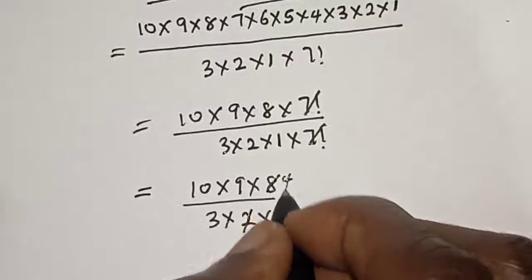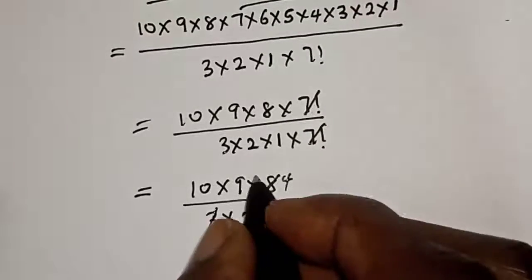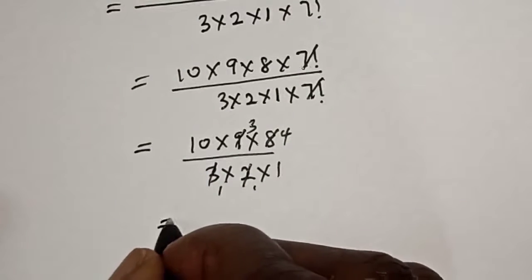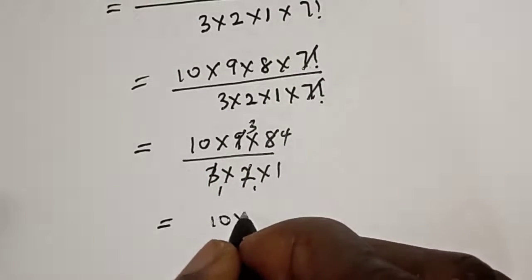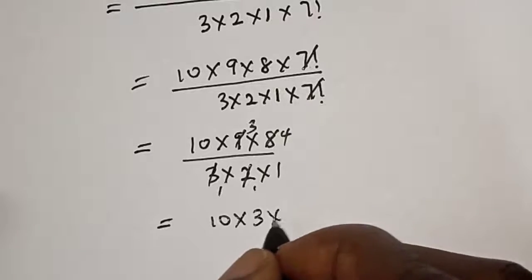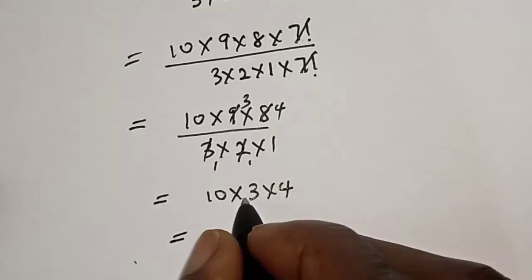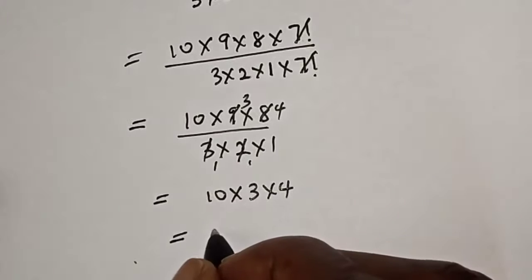2 here, 1, 2 here, 4, 3 here, 1, 3 here, 3. This is equal to 10 times 3 times 4, which is equal to 10 times 3, 30 times 4, 120.